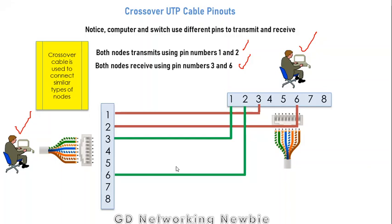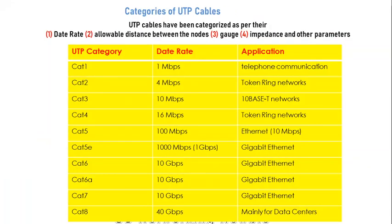So this was all about UTP cable, their pinout, and depending on their pinout we call them straight-through or crossover. After the introduction of UTP cable, different categories were developed — from Cat1 to Cat8 — based on cable quality, gauge, data rate, and supported distance. These categories have different data rates and are used for different applications, and we can discuss them in more detail in a future video.